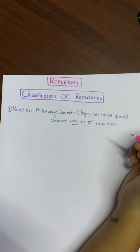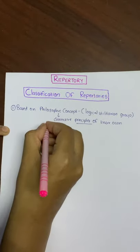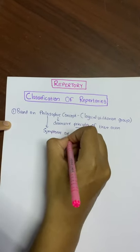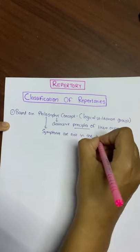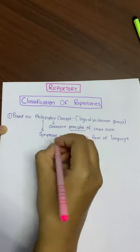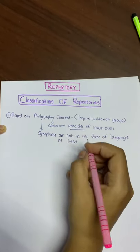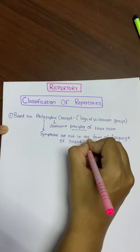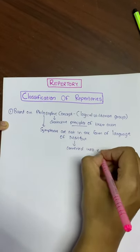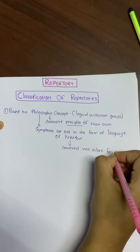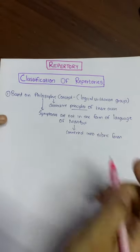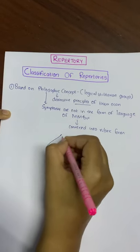In these repertories, the symptoms may not be found in the language of Materia Medica — the symptoms are not in the form of language of Materia Medica. But they are converted into rubric form depending upon the distinctive principle of that respective repertory. Further, the philosophical repertory is divided into sub-groups.